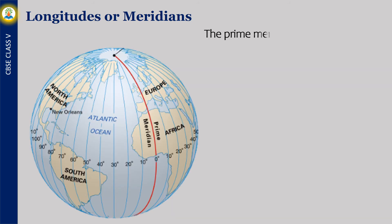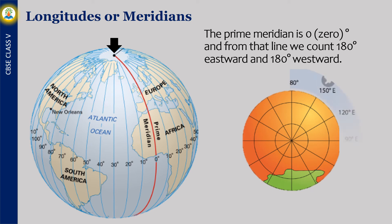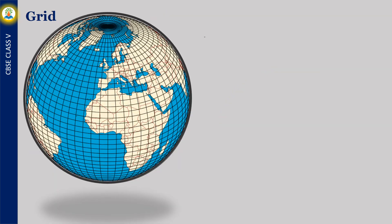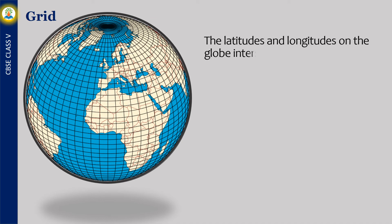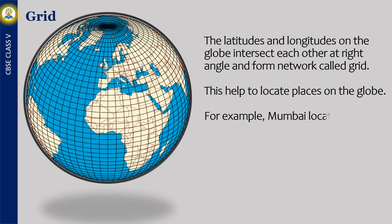The prime meridian is zero degrees, and from that line we count 180 degrees eastward and 180 degrees westward. To understand it in more detail, we will see from the top of the North Pole. The latitudes and longitudes on the globe intersect each other at right angles and form a network called the grid. This helps to locate places on the globe. For example, Mumbai is located on latitude 19 degrees north and longitude 73 degrees east.